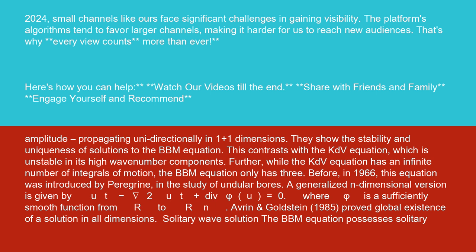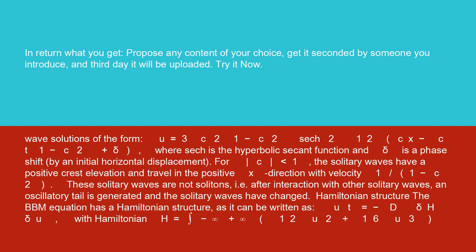Solitary wave solution: the BBM equation possesses solitary wave solutions of the form u equals 3c squared, 1 minus c squared, sech squared, one-half, cx minus ct over 1 minus c squared plus delta, where sech is the hyperbolic secant function and delta is a phase shift by an initial horizontal displacement.